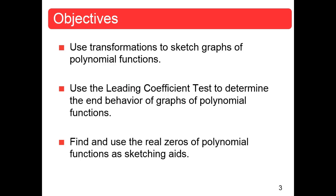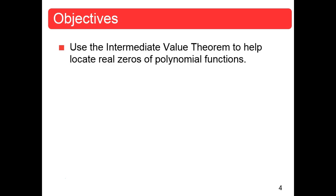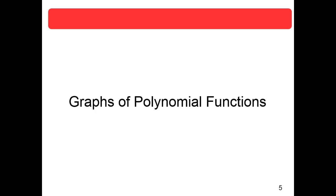The objectives are: we'll use transformations to sketch graphs of polynomial functions — we've done that before in chapter 1. We're going to use what they call the leading coefficient test to determine end behavior. I like to call it the leading term test, because we use the whole leading term. We'll also find and use real zeros of polynomial functions as sketching aids. This book loves to sketch graphs. The last objective is to use the intermediate value theorem to help locate real zeros.